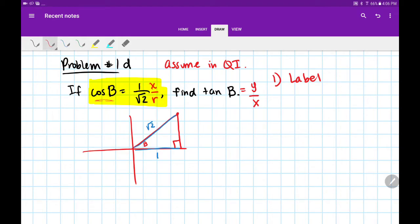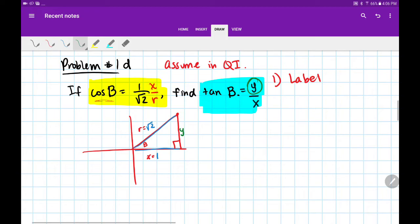I now know my x is 1, my r is √2. But to answer the question for tangent, I need y still. Let's solve for y using our Pythagorean theorem: x² + y² = r². Let's plug in what we know. x is 1, and r is √2, and I'm going to square that.